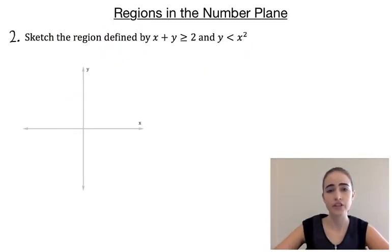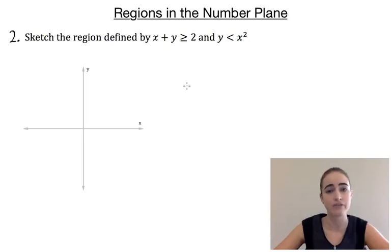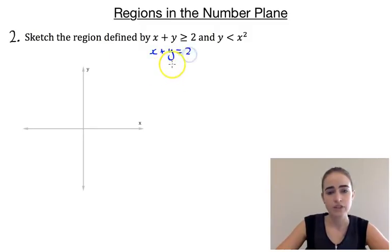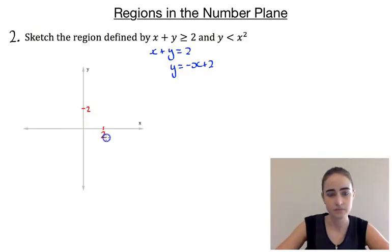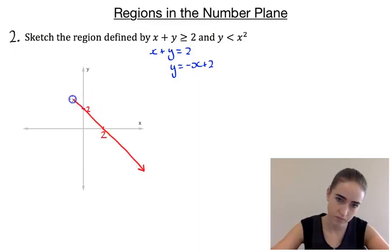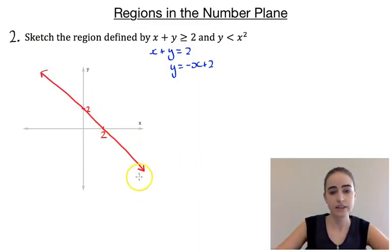Our second example asks us to sketch the region defined by two inequalities: x + y ≥ 2 and y < x². We'll graph each curve separately and then look at where their regions overlap. For the first one, treating it as x + y = 2 and rearranging gives y = -x + 2 — a straight line with gradient -1 and y-intercept 2. We draw this with a solid line because it's a greater than or equal to symbol.